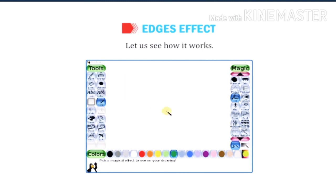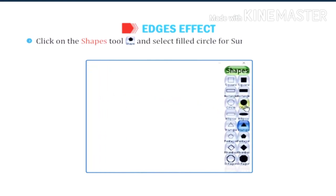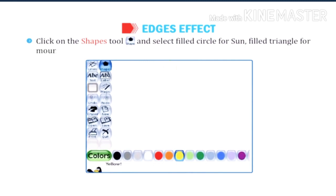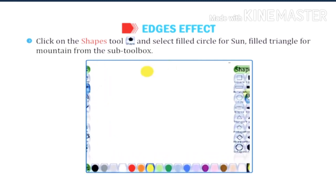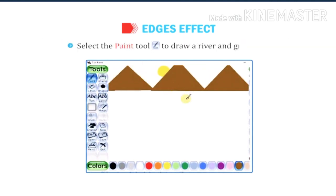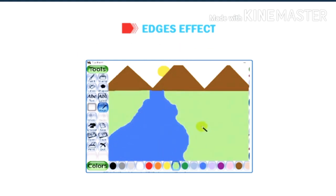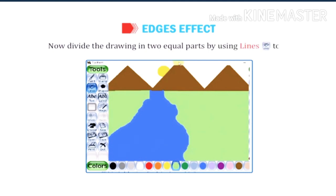Let us see how it works. Click on the shapes tool and select the filled circle for the sun and the filled triangle for the mountain from the sub-tool box. Select the paint tool to draw a river and grass. Now divide the drawing into two equal parts by using the line tool.